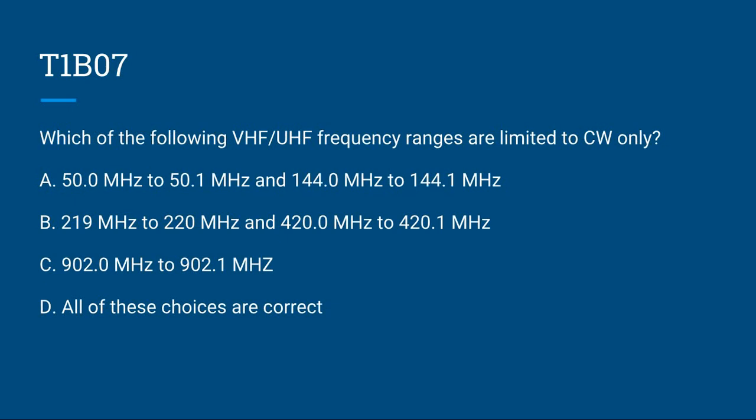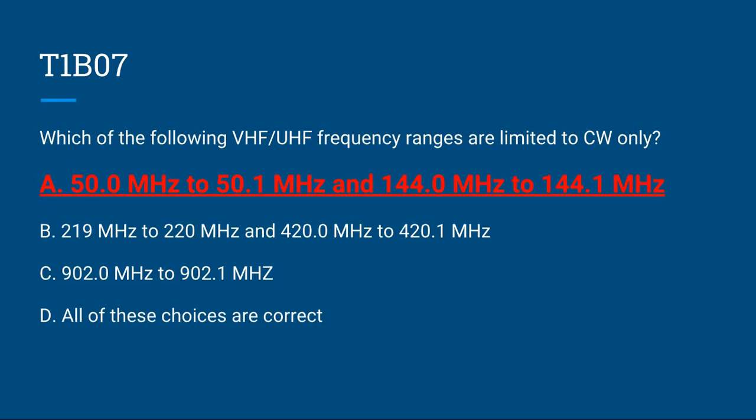T1B07: Which of the following VHF/UHF frequency ranges are limited to CW only? A, 50.0 MHz to 50.1 MHz and 144.0 MHz to 144.1 MHz; B, 219 MHz to 220 MHz and 420.0 MHz to 420.1 MHz; C, 902.0 MHz to 902.1 MHz; or D, all of these choices are correct. The correct answer is A, 50.0 MHz to 50.1 MHz and 144.0 MHz to 144.1 MHz.